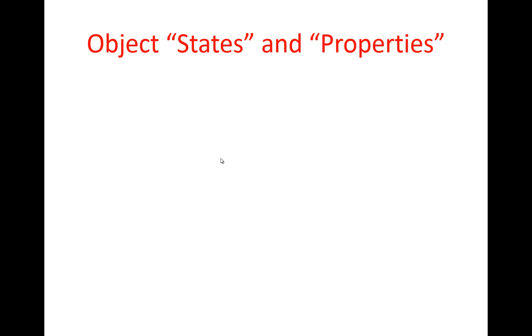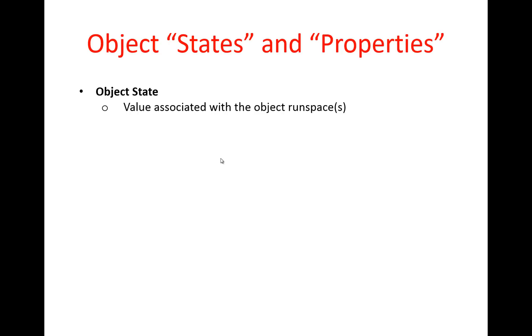Before we go ahead and extend our model, we need to first understand some basic concepts and definitions regarding Simeo. Specifically, I would like to talk about object states and properties, and then atom processes and Simeo processes. An object state is basically a value that is associated with the object's run space. State variables generally do change over the simulation run — during the simulation, the value of these object states change.